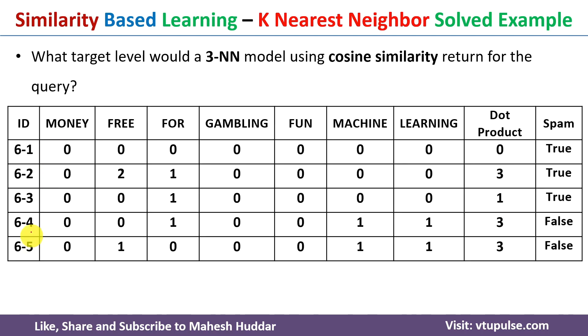Similarly we calculate the dot product between all remaining pairs — that is, 6 to 2, 6 to 3, 6 to 4, and 6 to 5. Once we have all the dot products, the next step is to calculate the denominator values for the cosine similarity.